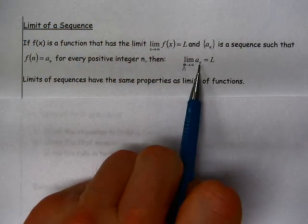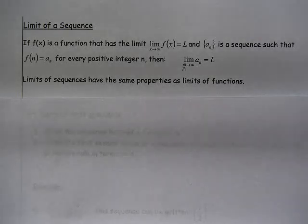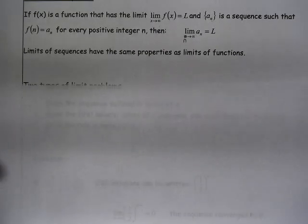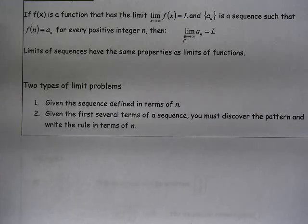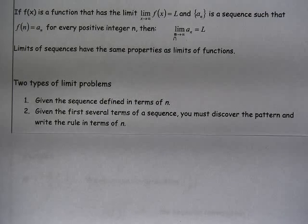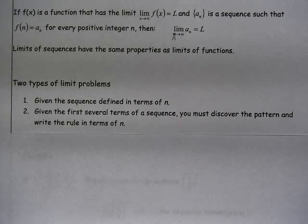We want to know if that last term, if that infinite term, the last term as n approaches infinity, approaches some specific value. And they have the same properties as functions. So once we have these sequences written in a kind of a function form in terms of n, it's the exact same thing as we did back in chapter one when we were looking at limits.